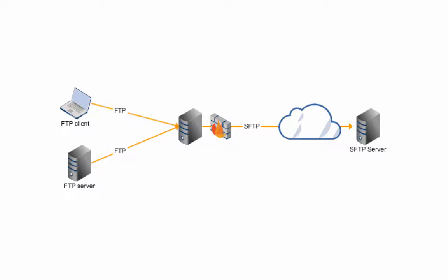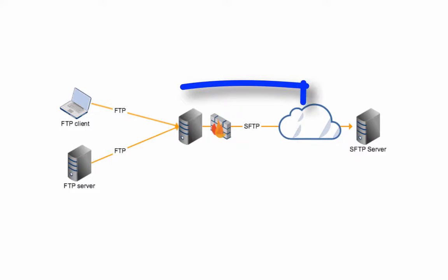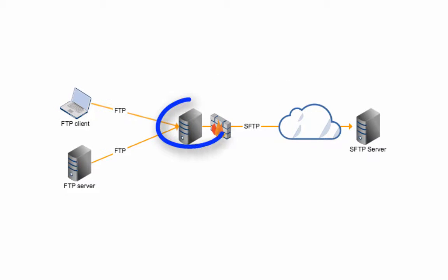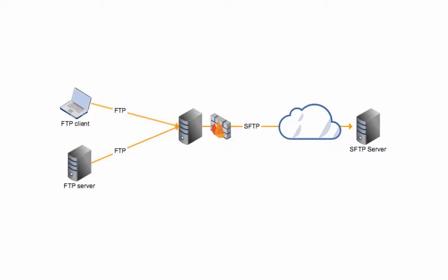When would you need to transfer files from FTP to SFTP? The ability to receive files via FTP and then forward them out via SFTP can be particularly useful if the receiving FTP server is behind your corporate firewall and you want to forward files to a remote SFTP server. Transferring files over SFTP instead of plain FTP would allow you to thwart eavesdroppers who may be sniffing on the network.